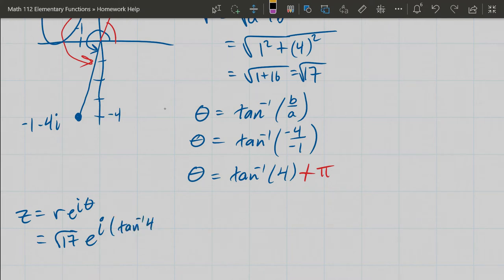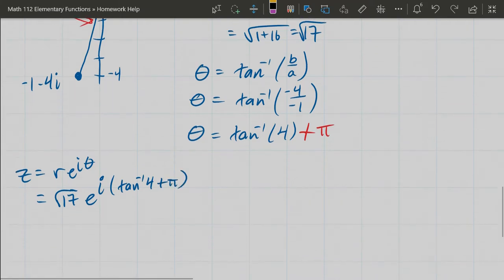So I'm going to keep it in parentheses to keep that thing together. This is z, our original number. Now we're going to take z to the 1/2 power, so we're going to apply the half power. I'm going to rewrite √17 as 17^(1/2).